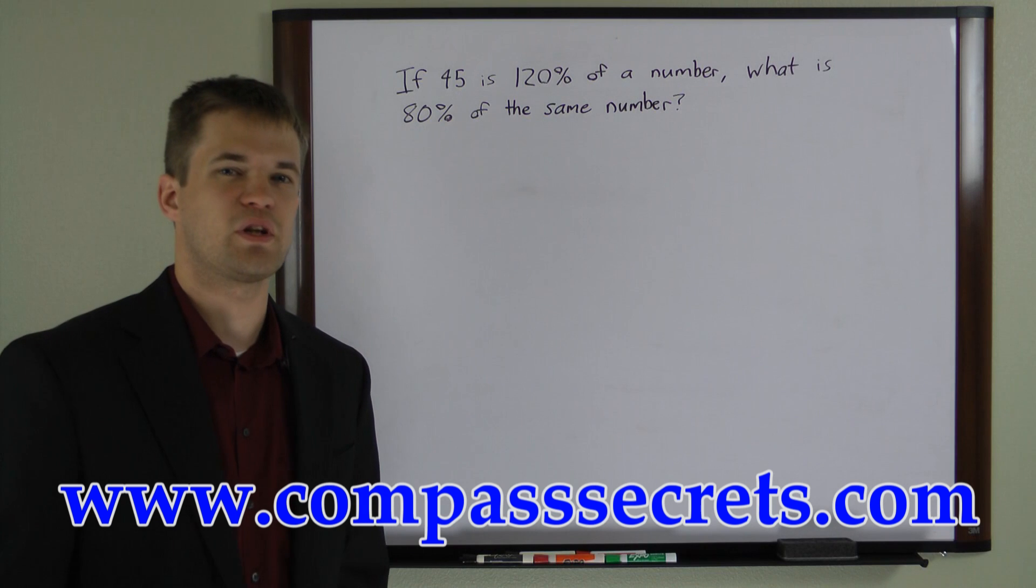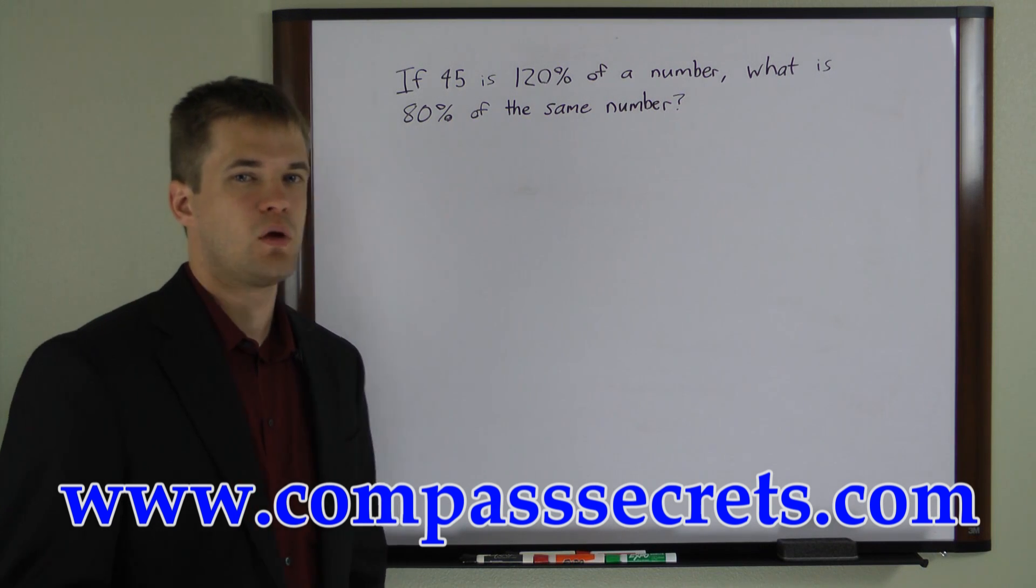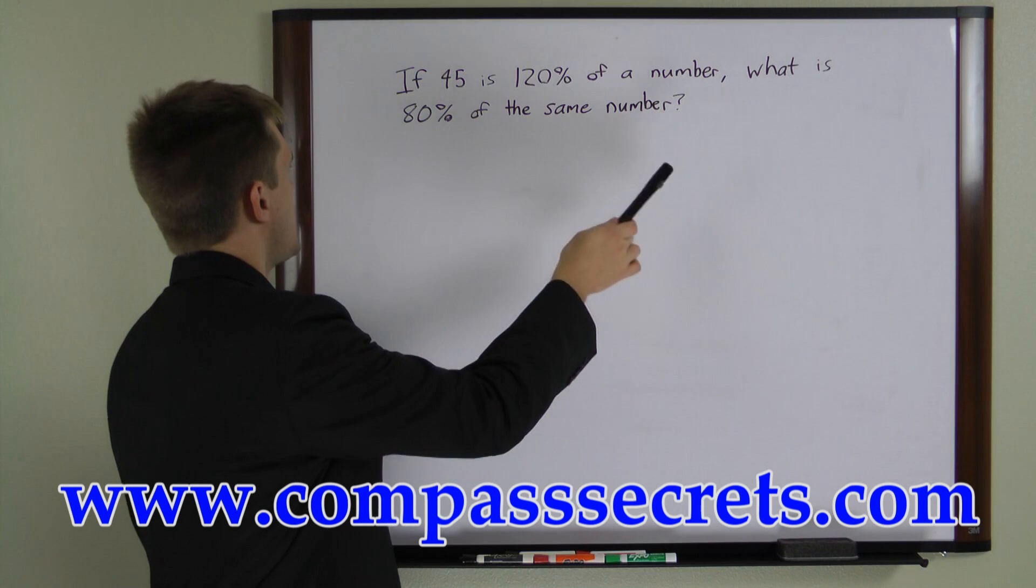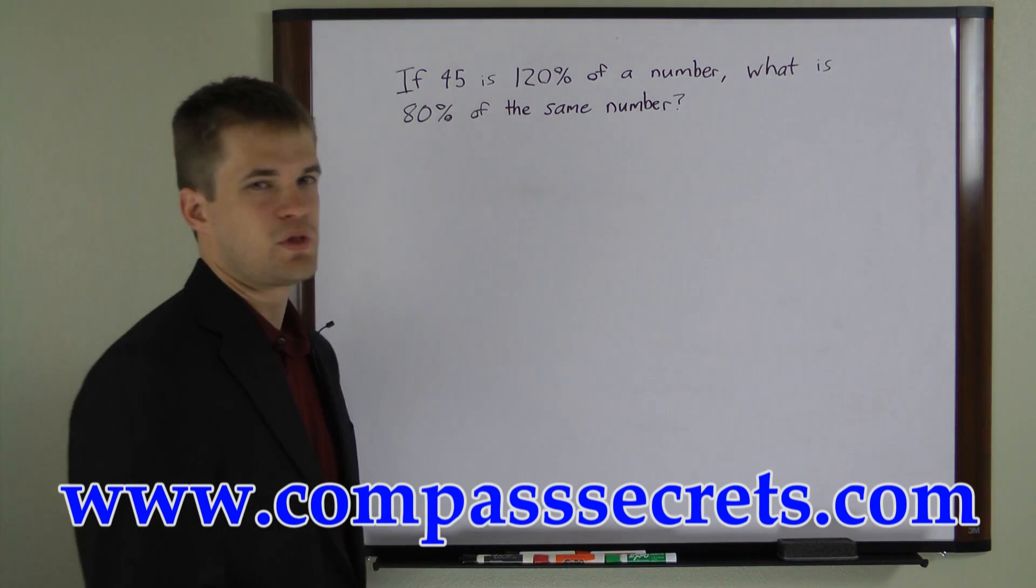Now what we have here is a two-step percentage multiplication problem. First we have to work backwards with the percent, and then we get to work forwards with the other percent.